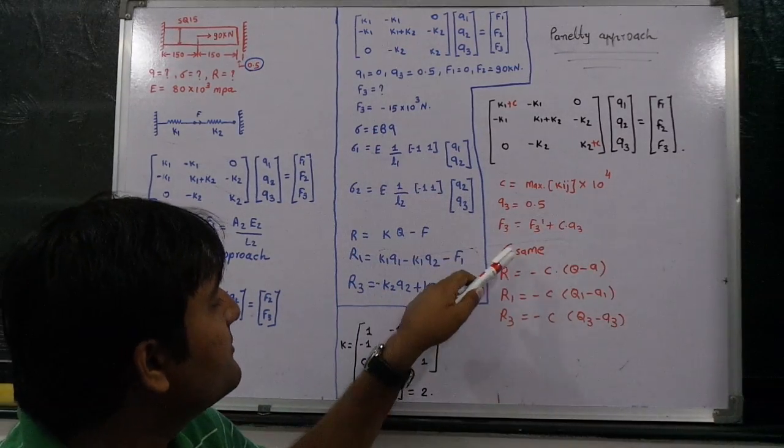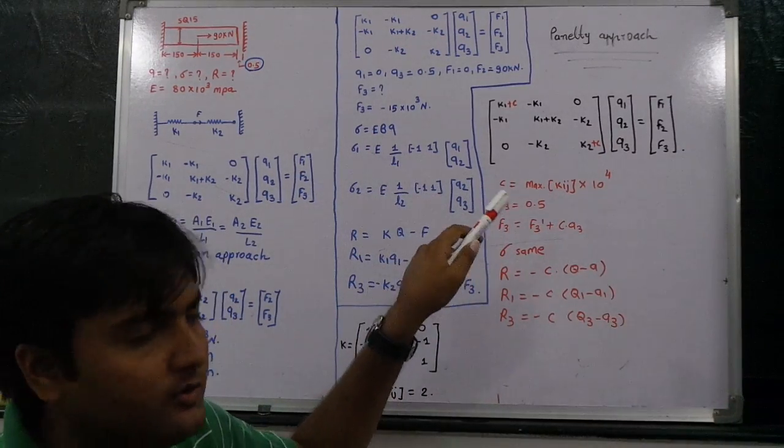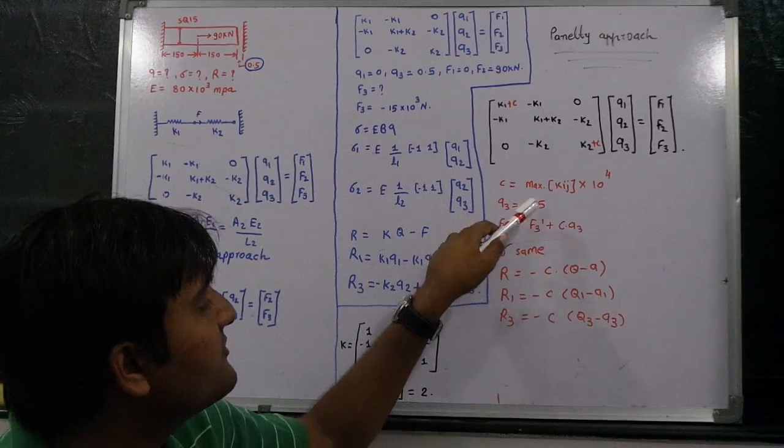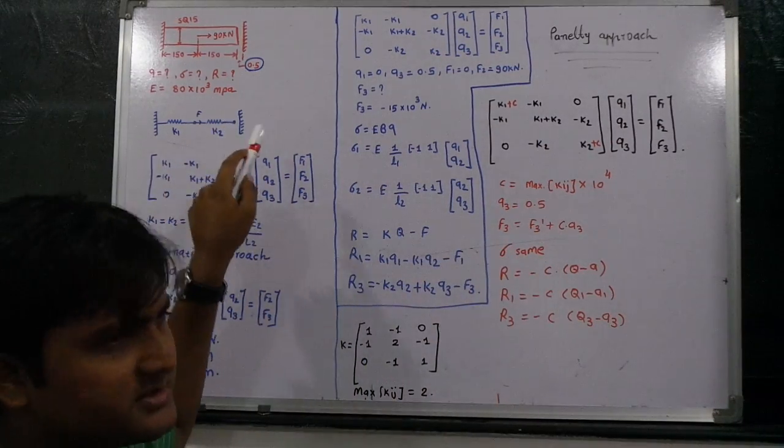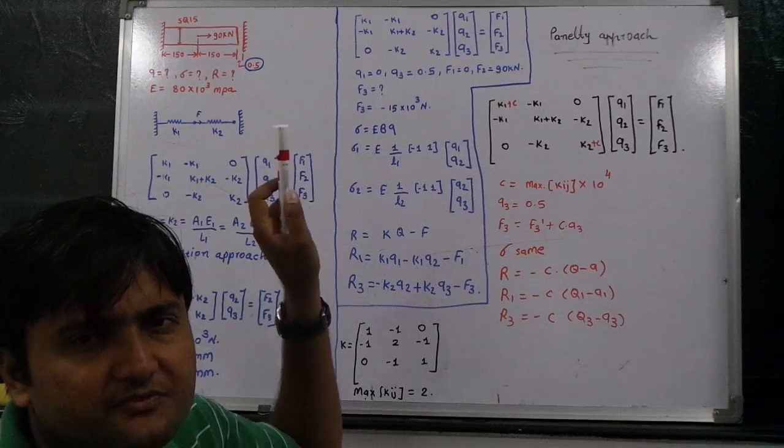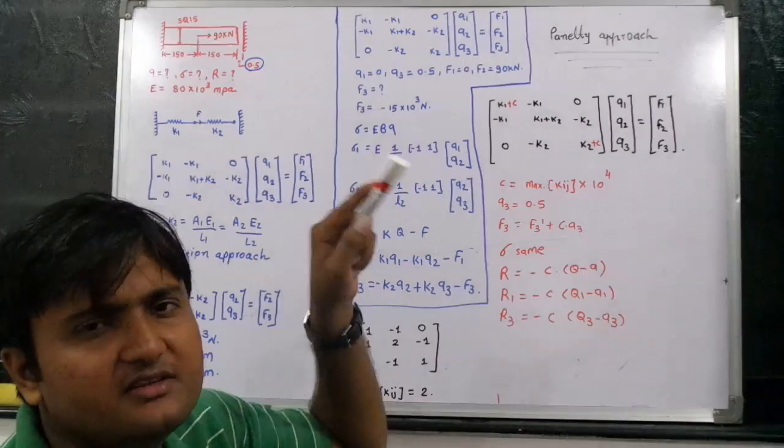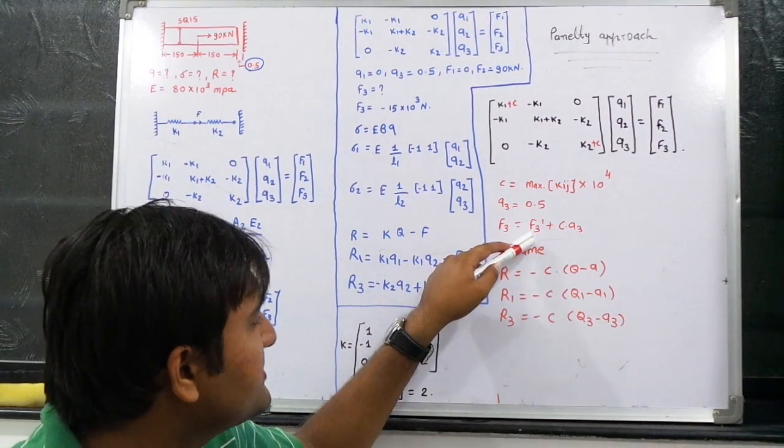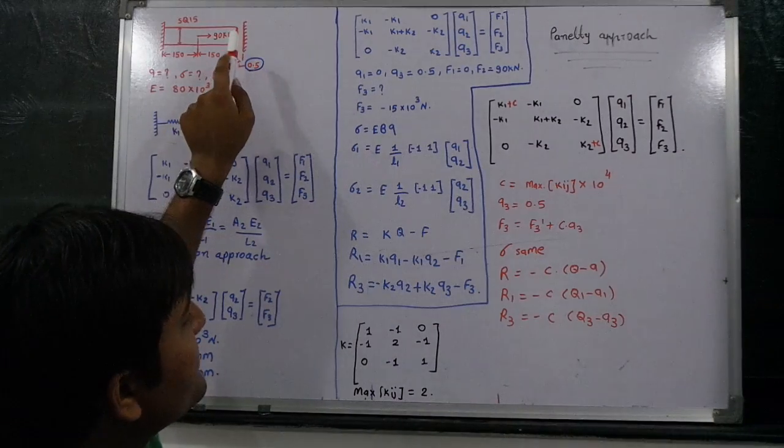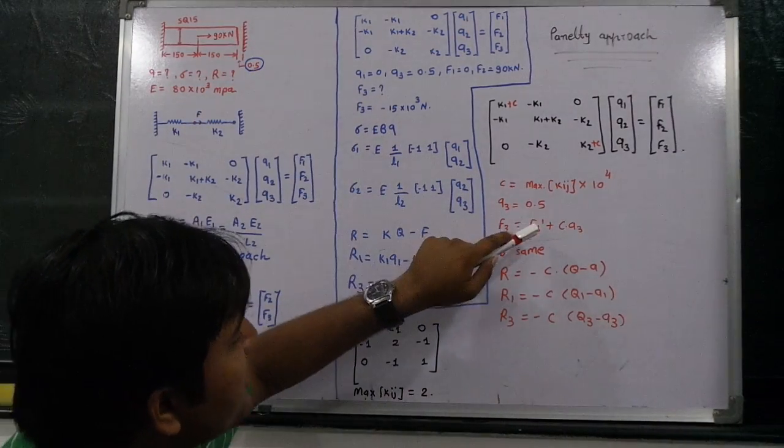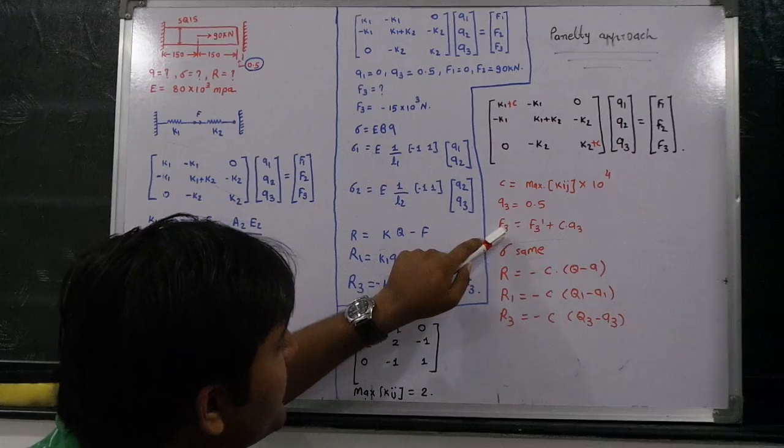Q3 is equal to 0.5, and F3 is equal to - this is the main condition - F3 is equal to F3_dash plus C into A3. F3_dash means if suppose some load is acting on the fixed support initially, then we need to take something here.